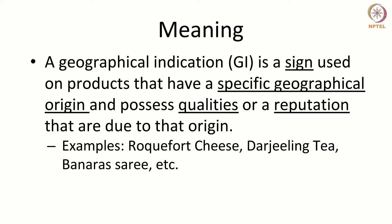A geographical indication, or GI, is a sign used on products that have a specific geographical origin and possess qualities or a reputation that are due to that origin. When goods come from a particular place and the quality of the good is attributed to that place — be it by its geography or by the people there — that product can be regarded as a subject matter of a geographical indication, and a separate right can be registered called the GI.